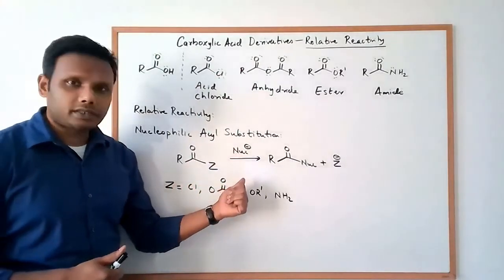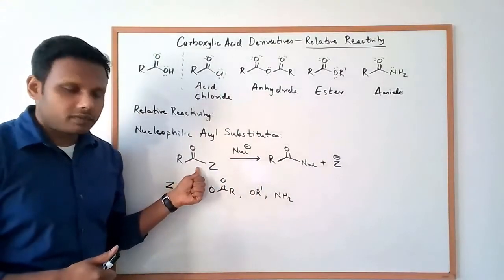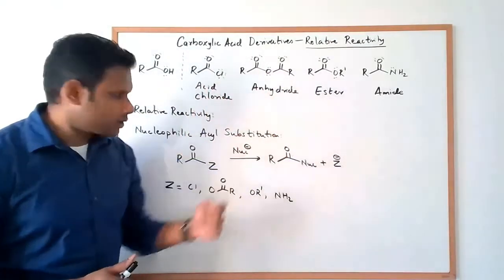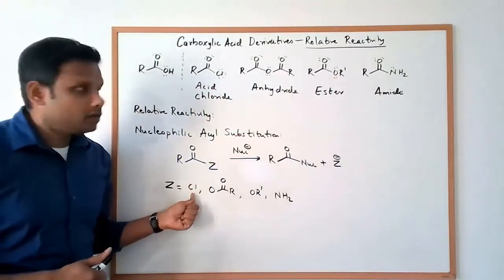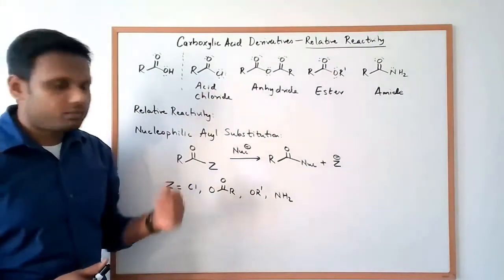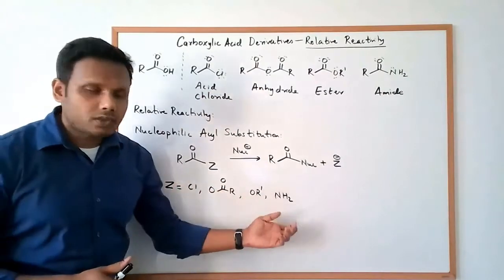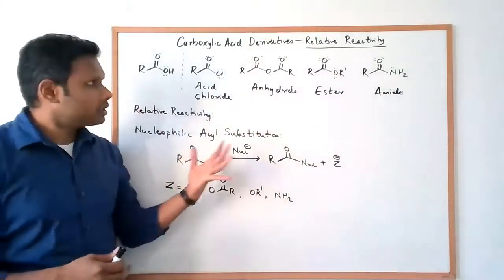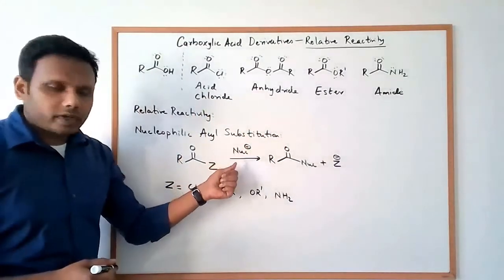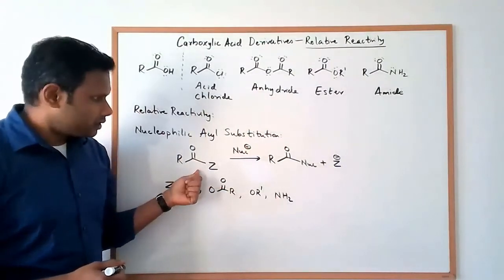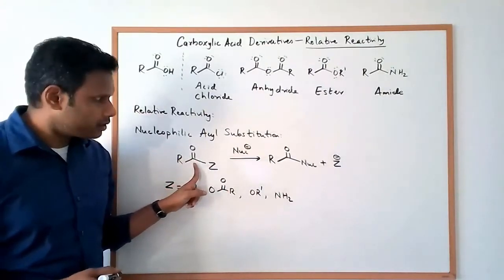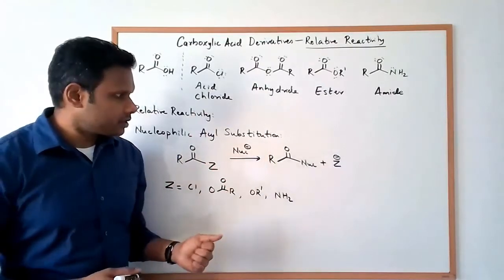The schematic of this reaction is shown here, where a carboxylic acid derivative — I'm using Z to represent pretty much any of these carboxylic acid derivatives, because Z could be a chlorine, and that would be an acid chloride. It could be a carboxylate ion, and then it would be an anhydride, or an ester, or an amide. So when a nucleophile attacks a carboxylic acid derivative, it undergoes a substitution. And since the substitution happens at the acyl carbon, this reaction is called a nucleophilic acyl substitution.